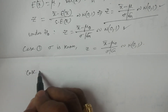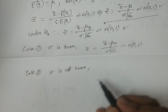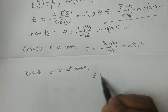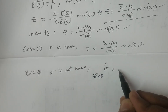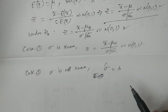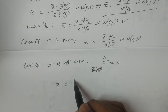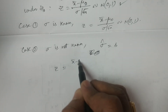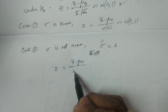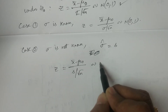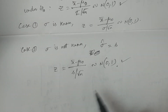In Case 2, sigma is not known — if sigma is not specified, then sigma is estimated by s. Therefore, the test statistic z becomes x̄ minus mu naught divided by s by root n, where sigma is replaced with s. This also follows N(0,1). If sigma is not known, this is the formula you want to use to calculate the test statistic.